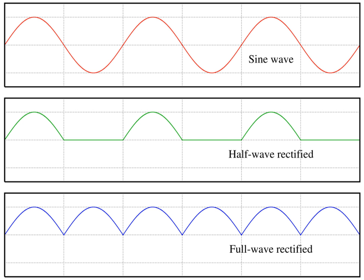Waves are described by a wave equation which sets out how the disturbance proceeds over time. The mathematical form of this equation varies depending on the type of wave. Further, the behavior of particles in quantum mechanics are described by waves. In addition, gravitational waves also travel through space, which are a result of a vibration or movement in gravitational fields.